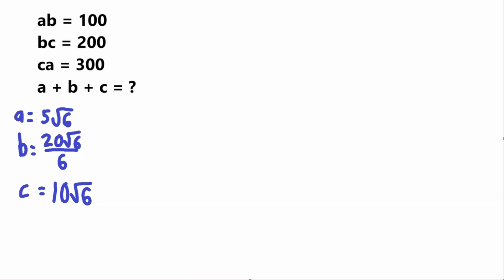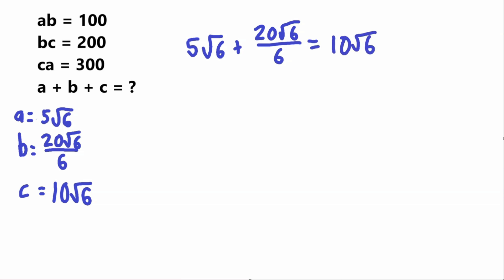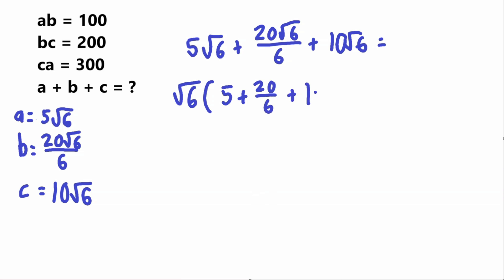Now we have our three values and we need to add them together. A plus B plus C equals 5√6 plus 20√6/6 plus 10√6. Each term has a √6, so we can factor it out, leaving √6 times (5 plus 20/6 plus 10). Also, 20/6 simplifies to 10/3 since both are divisible by 2.